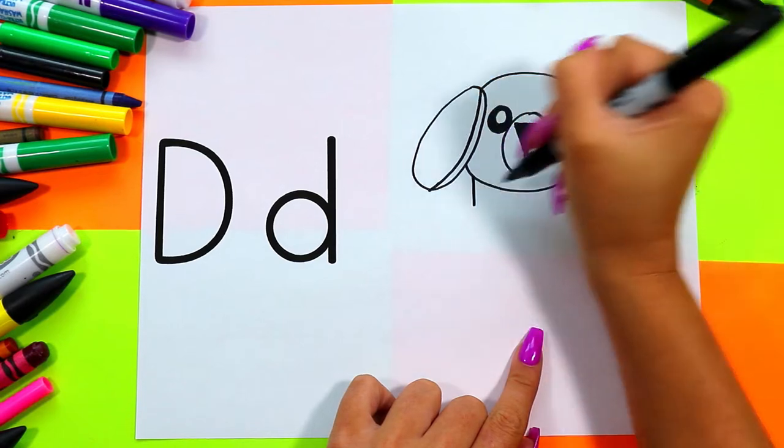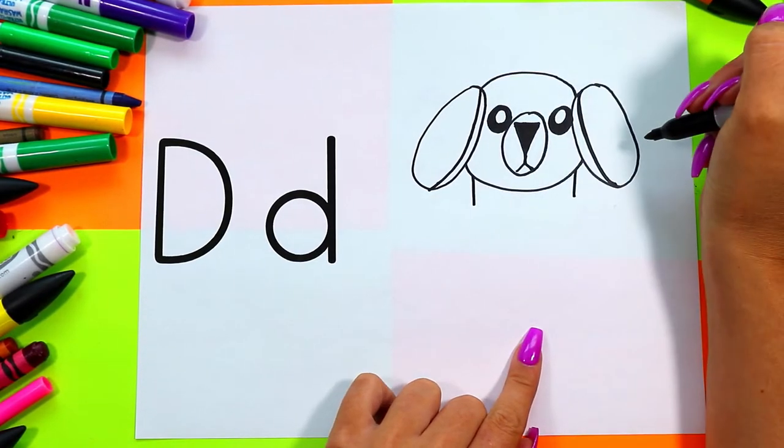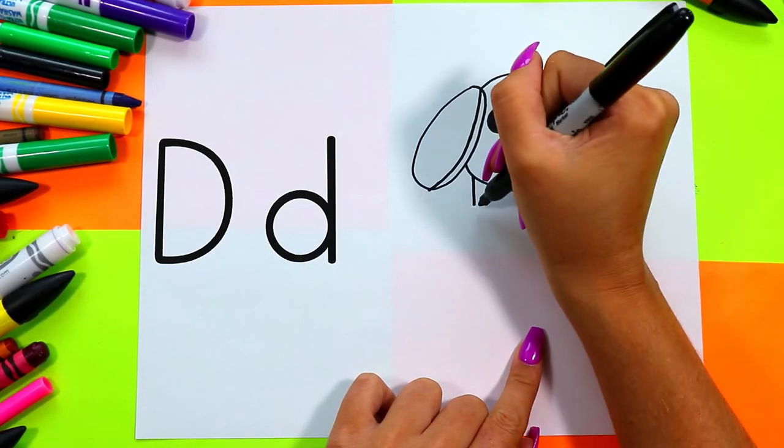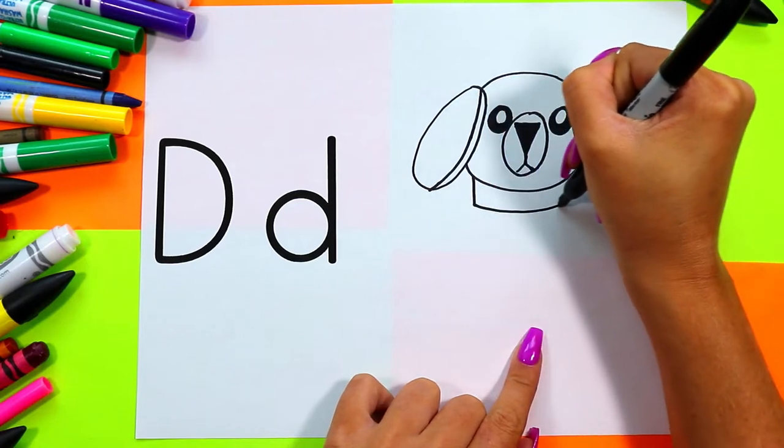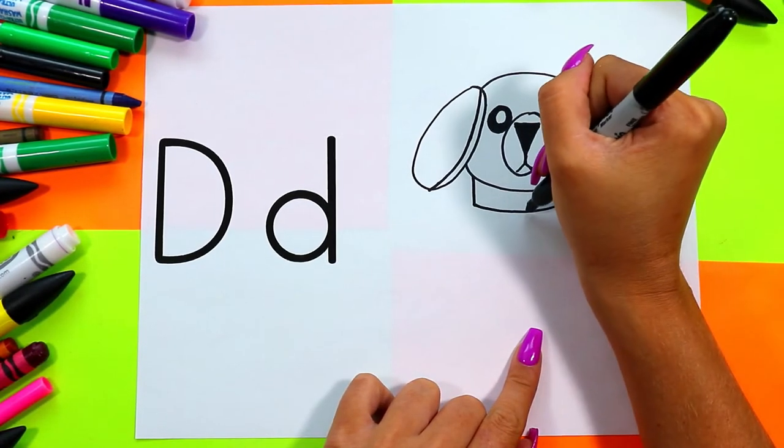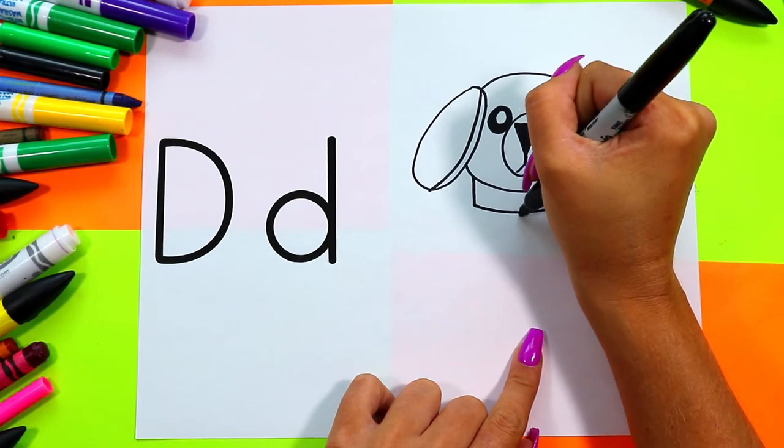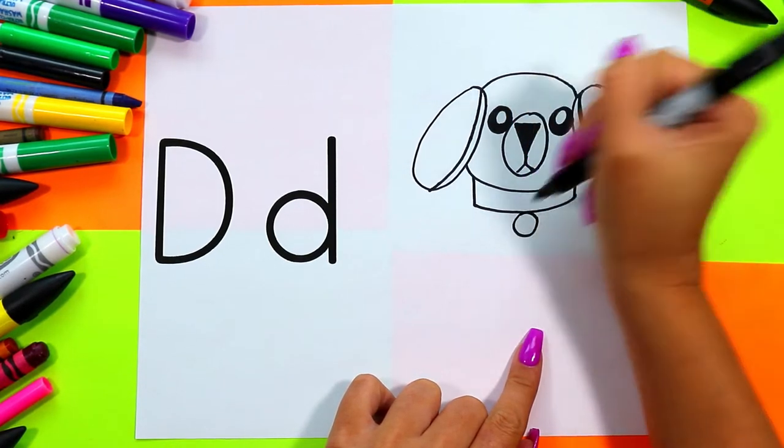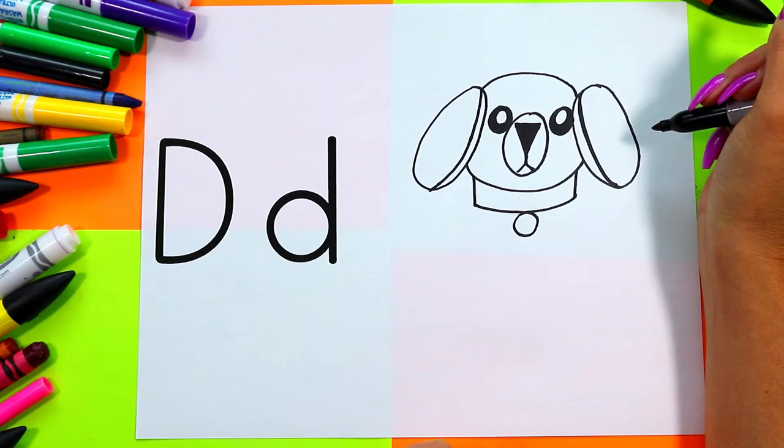Next we're going to draw two lines down from the head and one line across for dog's collar, and we're going to draw a circle under the collar for the tag.